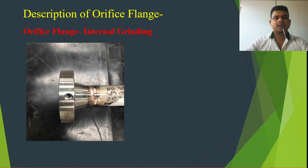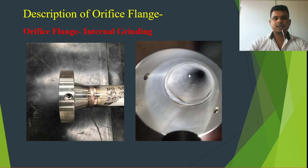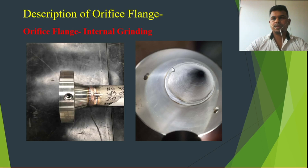Another important topic is orifice flange internal grinding. When we weld the orifice flange to the pipe, we know that weld root can protrude inside. If the root protrudes, it creates a disturbance during water or gas flow, affecting the orifice meter reading. So you cannot get a proper reading from the orifice meter. That is the purpose of grinding — I will show you.